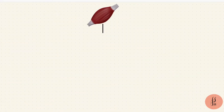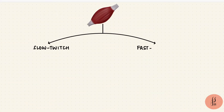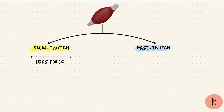Skeletal muscle fibers could be slow twitch or fast twitch fibers. The slow twitch fibers contract slowly and for longer durations, with lesser force. The fast twitch fibers contract faster and for a shorter duration, but with more force.